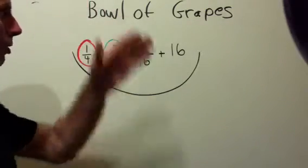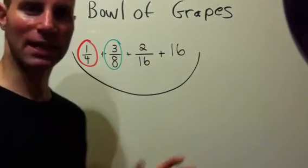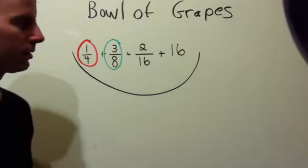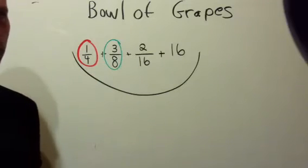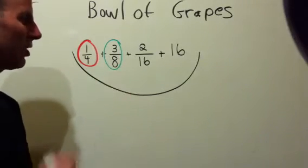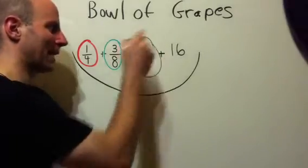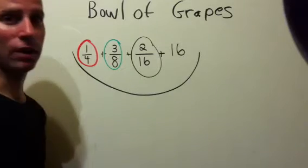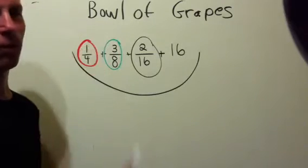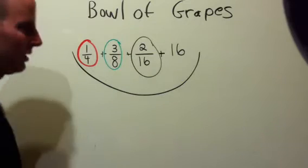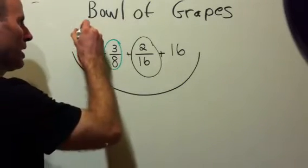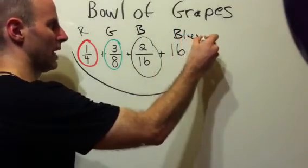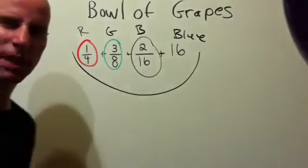This one we're going to call the bowl of grapes, and it's filled with all these different grapes. One fourth of the grapes are red, three eighths of the grapes are green, two sixteenths of the grapes are black, and then we have sixteen grapes left over and these are blue. My question is, how many grapes are in this bowl?